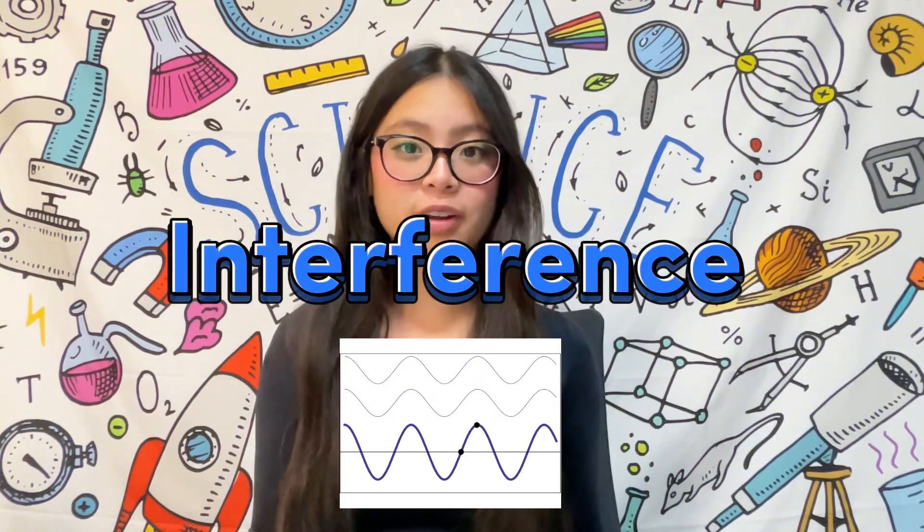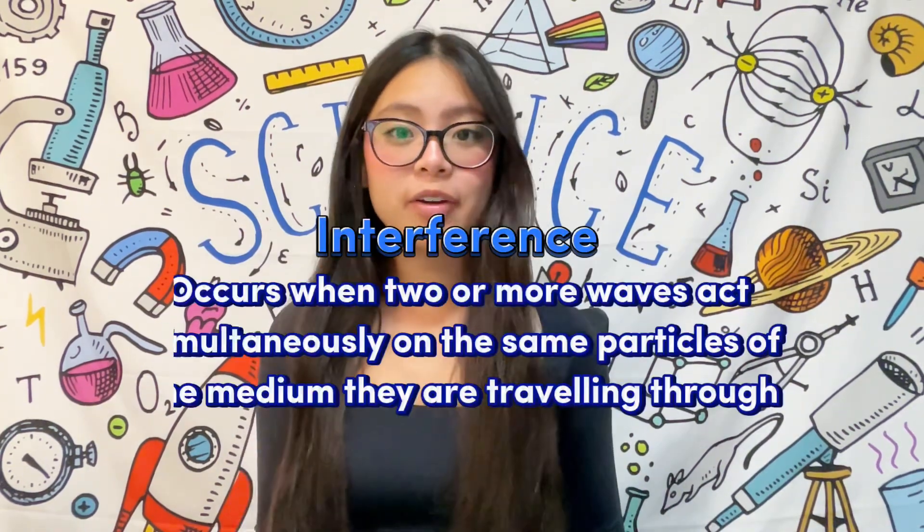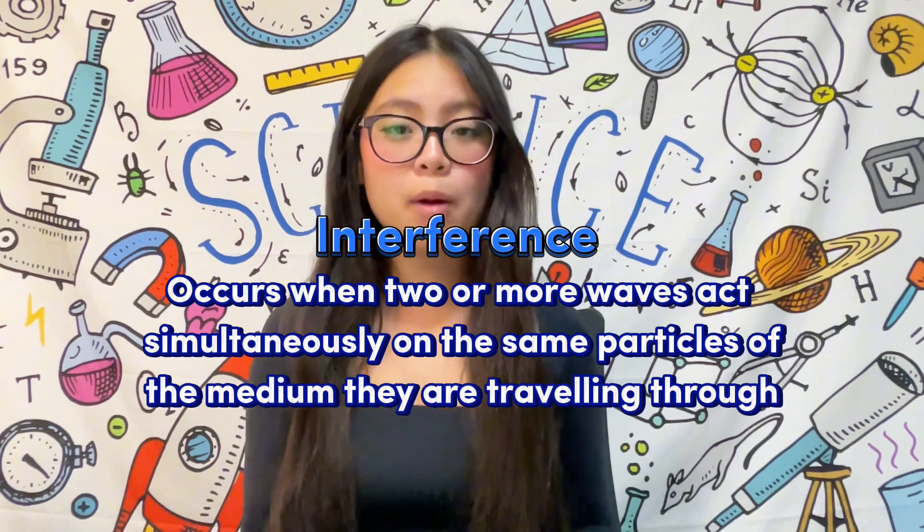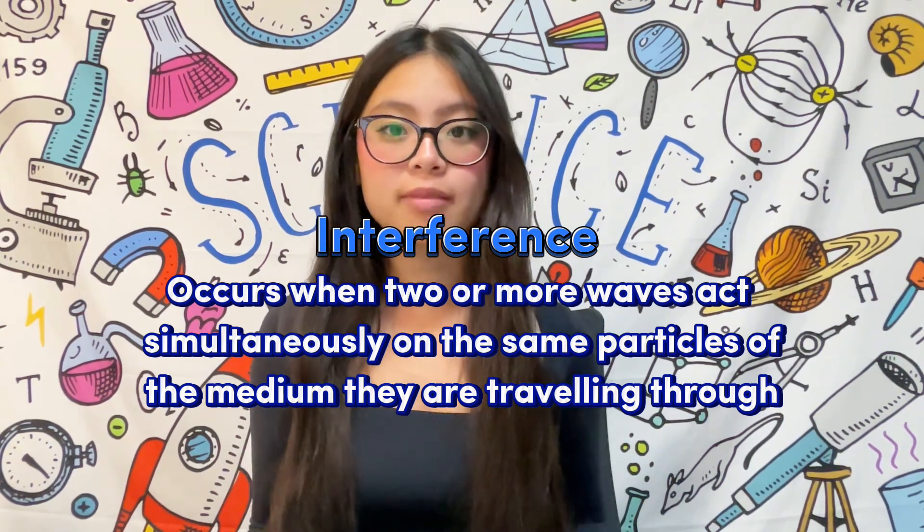Now let's talk about an extremely significant property of waves, interference. Interference occurs when two or more waves act simultaneously on the same particles of the medium that they are traveling through.